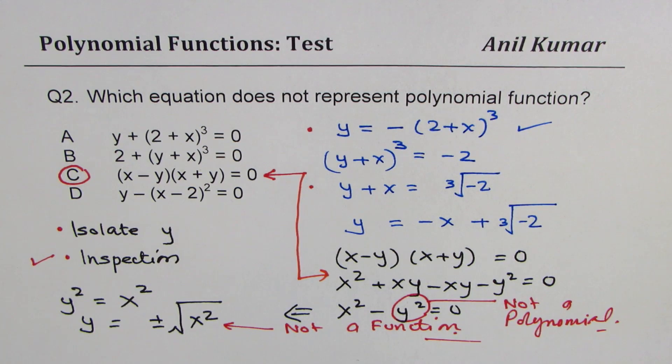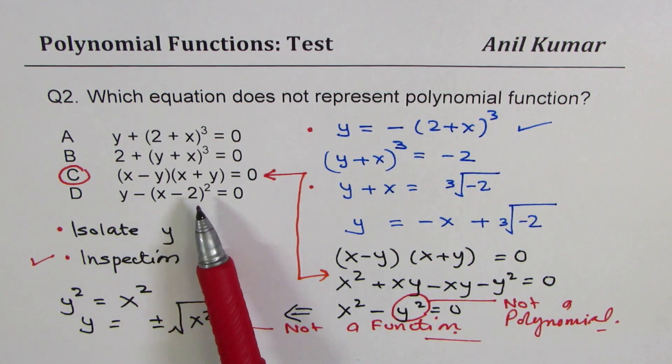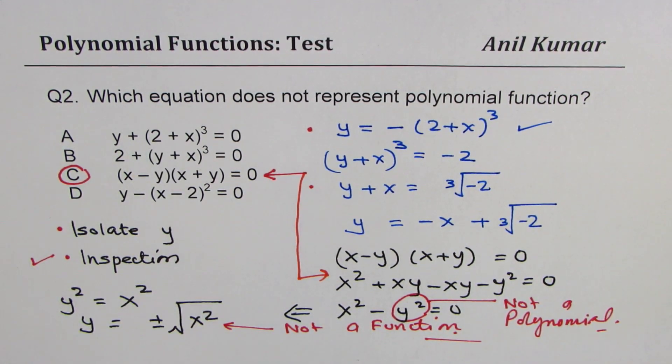Now this one clearly is a polynomial function, y equals to x minus 2 whole squared. So by elimination also, you could have achieved the result. So I hope the concept is clear. Thanks for watching and all the best.